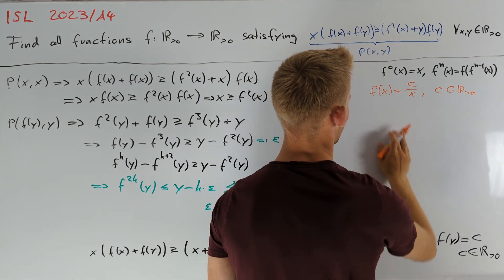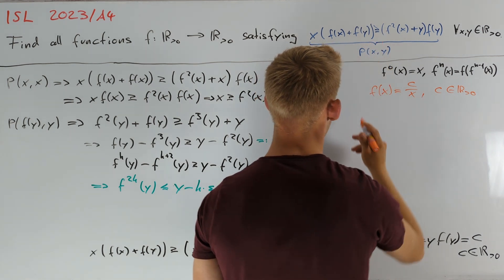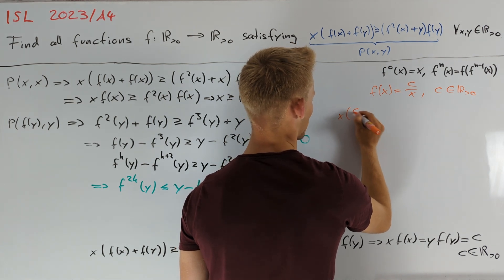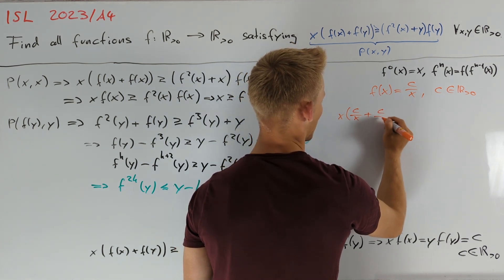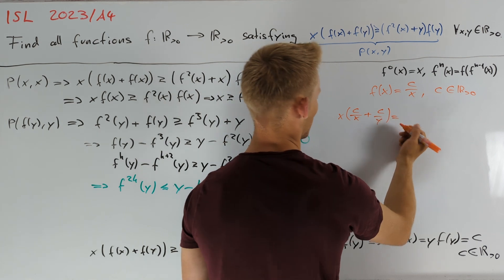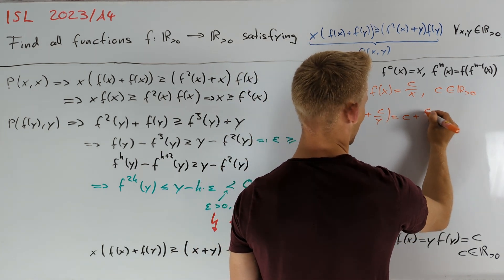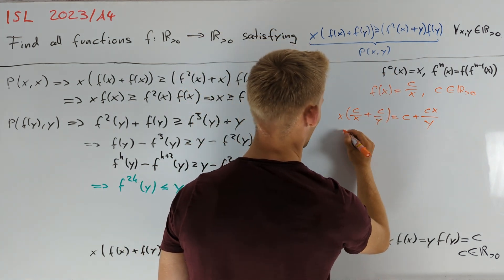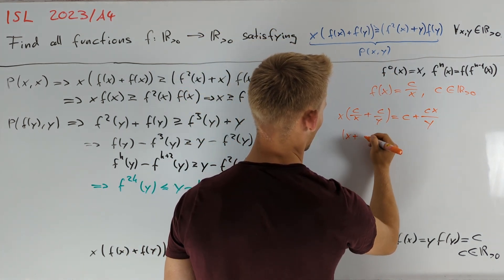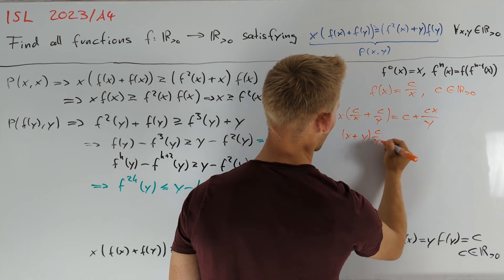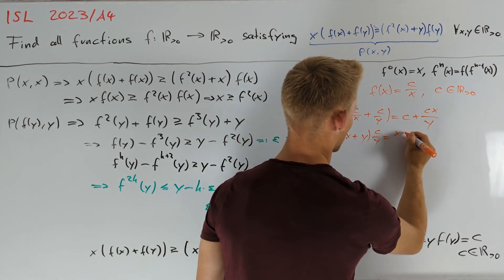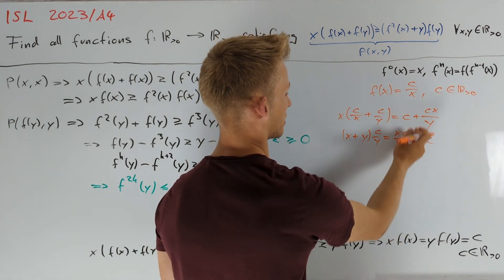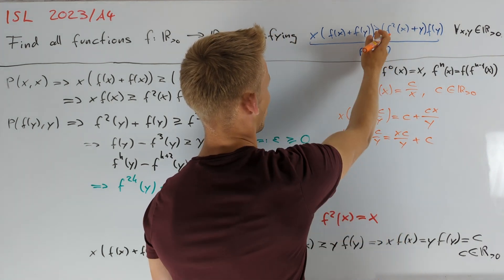It is left to check that these functions satisfy our inequality. And we can do this, namely on our left hand side we have x times c/x plus c/y which is equal to c plus cx/y. And on our right hand side we have (x+y) times c/y which is equal to xc/y plus c. And here we see that both sides are equal and therefore the inequality holds.